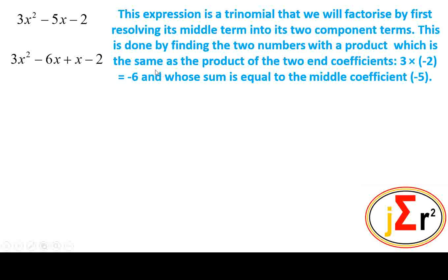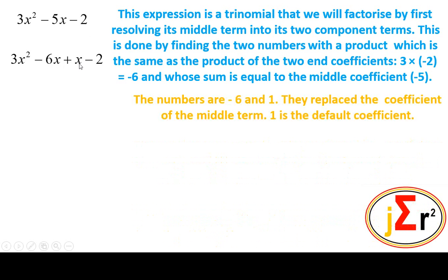They will therefore replace the negative five that we have here. This negative five x will be negative six x plus one x or plus x. The coefficient of one is not necessary to show because one is the default coefficient. The numbers are negative six and one. They replace the coefficient of the middle term. They replace this negative five here. Negative six plus one.